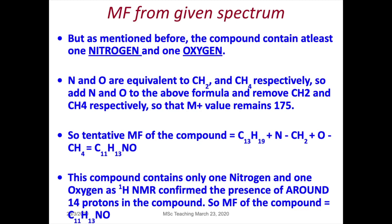But we already said that we have oxygen and nitrogen. So from C13H19, you add nitrogen (MW=14) and remove CH2 (also 14), then add oxygen (MW=16) and remove CH4 (also 16). The molecular formula of this compound then becomes C11H13NO, and if you add up the molecular weight it comes to 175.